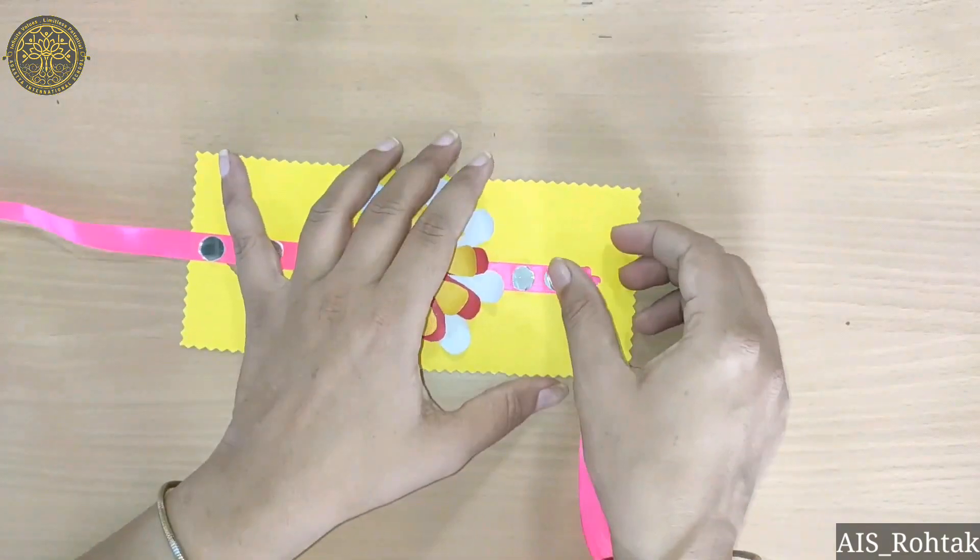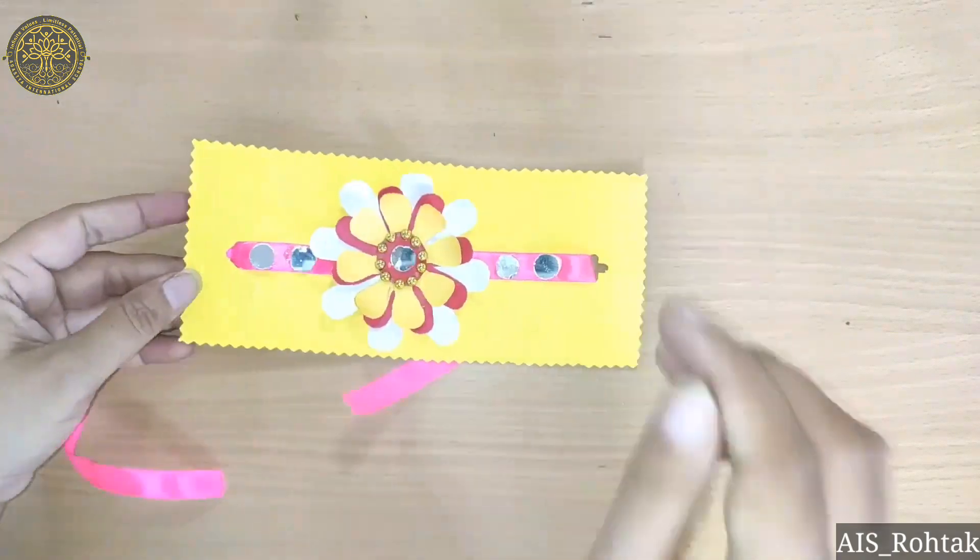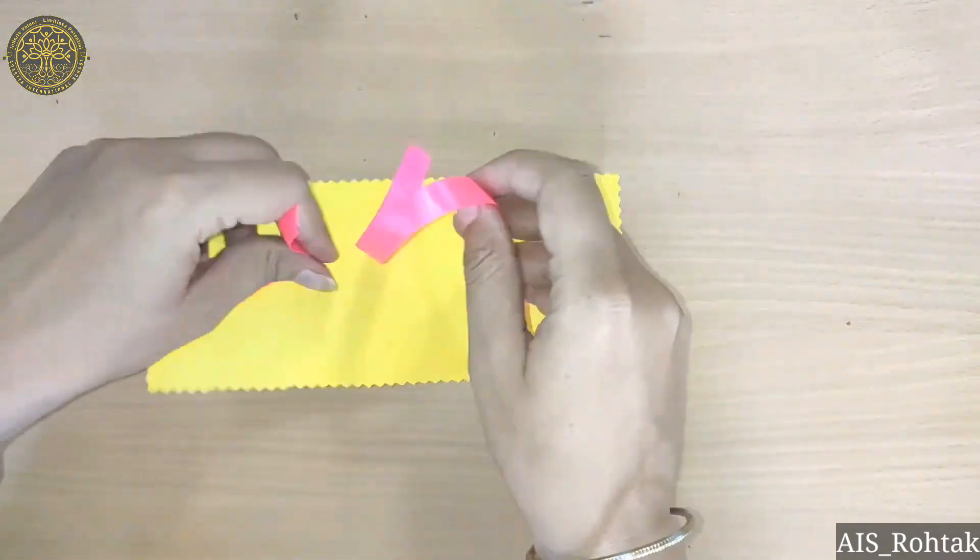And we will remove the ribbon from the back side. Like this. And at the back, we will tie a note.